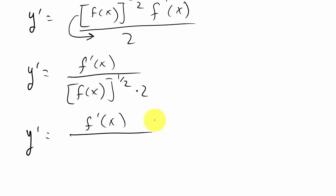Now I could have wrote the two in front but it doesn't matter right now. So y prime is f prime of x over, now I'm going to write the two first and then I'm going to rewrite this as the square root of f(x).